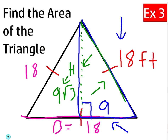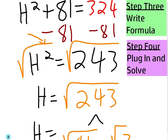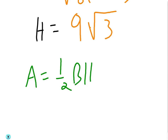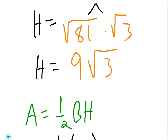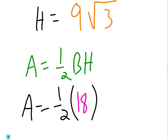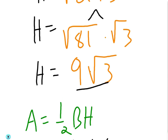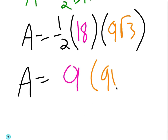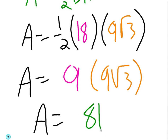Now that we have the height, we can figure out the area. Write out the formula: area equals one-half base times height. The base is 18 and the height is 9√3. Half of 18 is 9, times 9√3 — just multiply the 9s together: 9 times 9 is 81. The final answer is area equals 81√3.